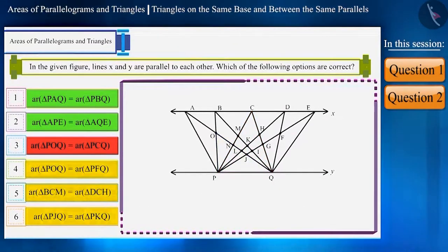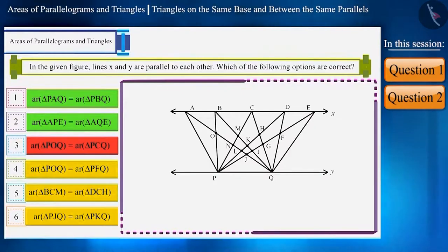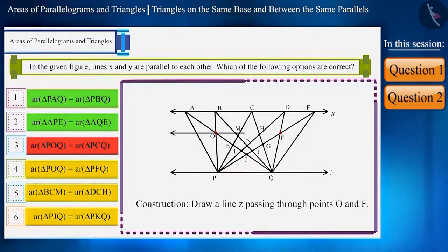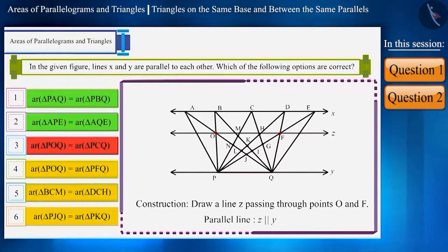Similarly, you can compare all the other options yourself or with your friends. Before ending this session, let me give you a hint for the fourth option: draw a line passing through points O and F and call this line Z. Line Z will be parallel to line Y.